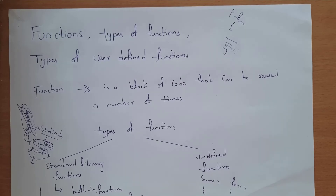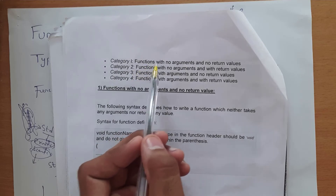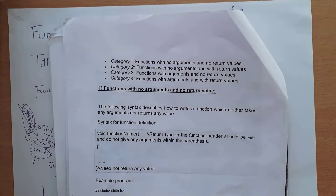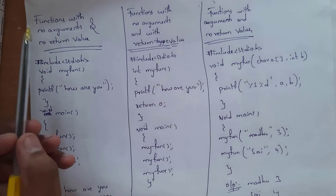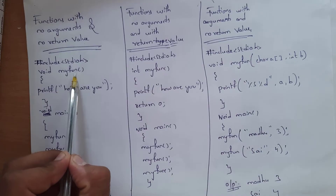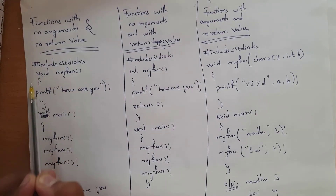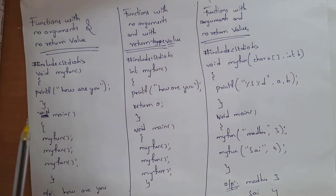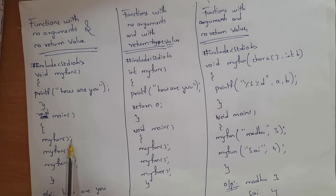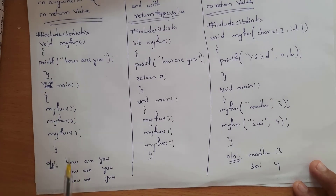User defined functions are classified into four types: first, functions with no arguments and no return value; second, function with no arguments and with return value; third, function with arguments and no return value; fourth, function with arguments and with return value. For the first type — no arguments and no return value — write void my_fun with no parameters inside. Inside the function write printf 'how are you'. Call my_fun three times in void main and you get 'how are you' printed three times.